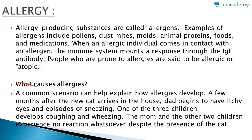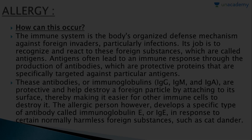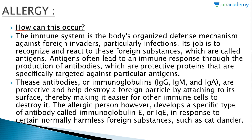A common scenario can help explain how allergies develop. A few months after a new cat arrives in the house, the dad begins to have itchy eyes and episodes of sneezing. One of the three children develops coughing and wheezing. The mom and the other two children experience no reaction whatsoever despite the presence of the cat. How can this occur?